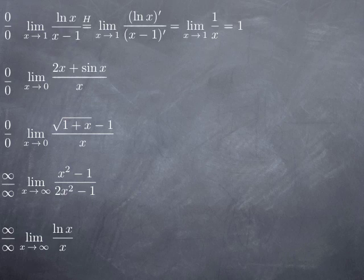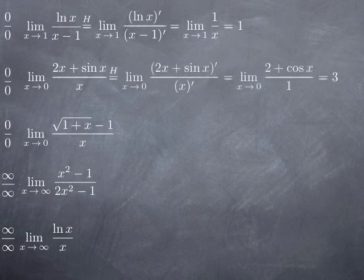In the second case, we again have a quotient of differentiable functions in indeterminate 0/0 form, so we apply L'Hôpital's rule. The limit equals the limit of the quotient of the derivatives of top and bottom. The derivative of the top (2x + sin x) is 2 + cos(x), and the bottom's derivative is 1. The limit at 0 of (2 + cos x)/1 is 2 + cos(0) = 2 + 1 = 3.